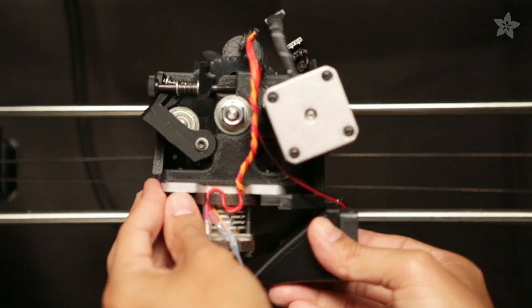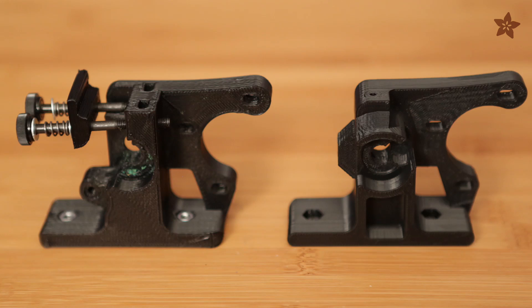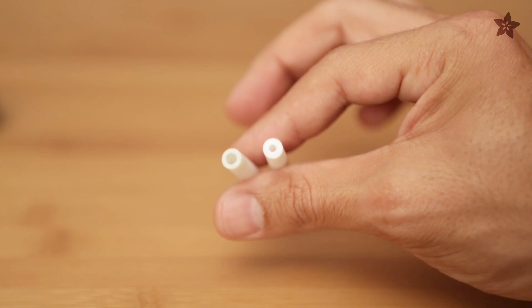Our update makes an improvement to the extruder mount, allowing for better feed rate and retraction. Download the parts and print them out to make your own. The pair of Teflon tubes converts the filament diameter from 3mm to 1.75mm.